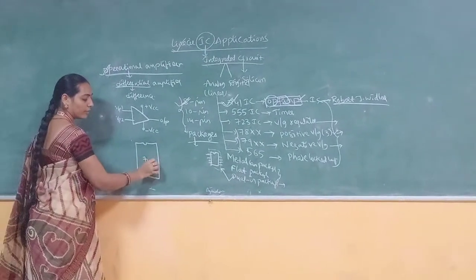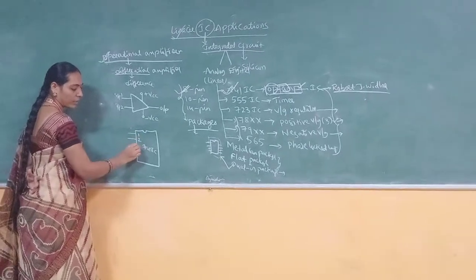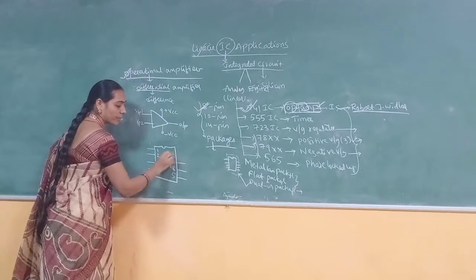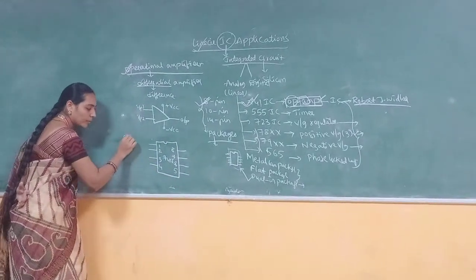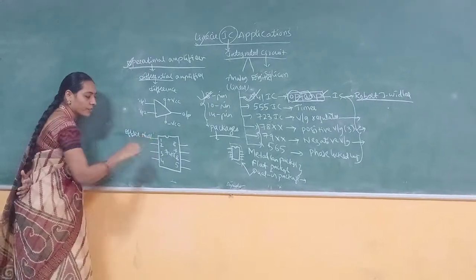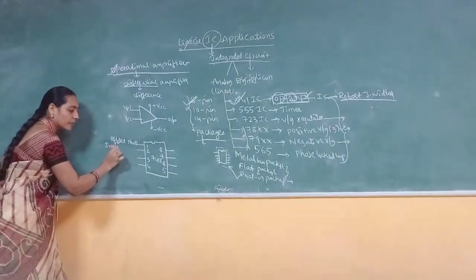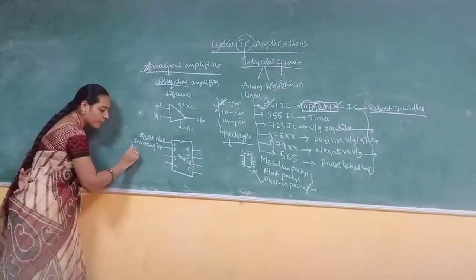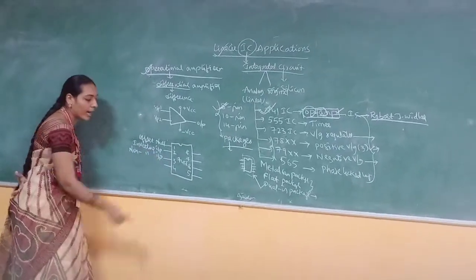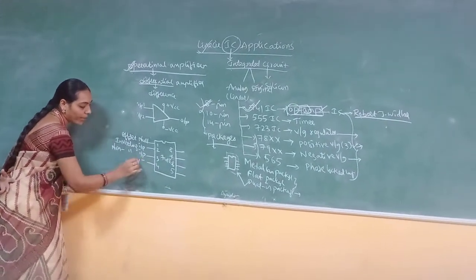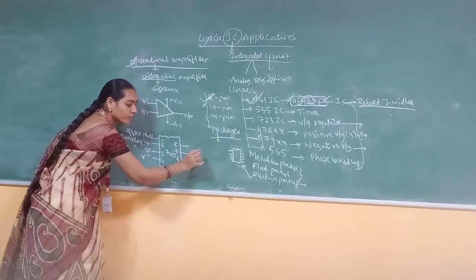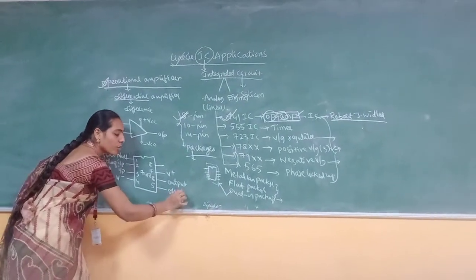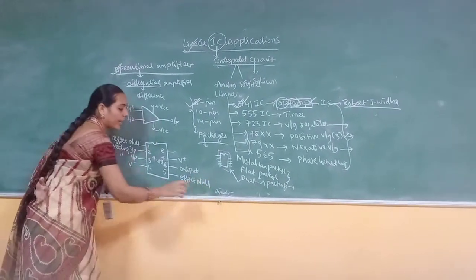Let me take the 8-pin 741 IC terminal. The 1st pin gives the offset null. The 2nd pin is the inverting input terminal. The 3rd pin is the non-inverting input terminal. The 4th pin is the negative supply. The 7th pin is the positive supply. The 6th pin is the output terminal. The 5th pin is also offset null. And the 8th terminal has no connection — it is left open.